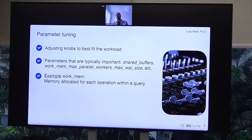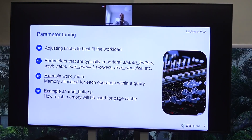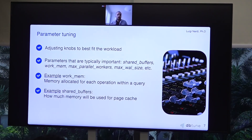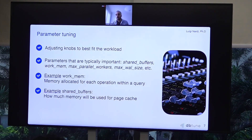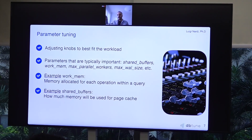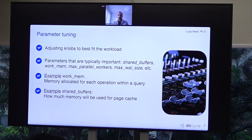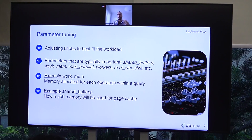Another very important parameter is shared_buffers — how much memory you allocate for your page cache. This is critical to avoid spilling to disk frequently, especially if your application requires caching table data and index data.